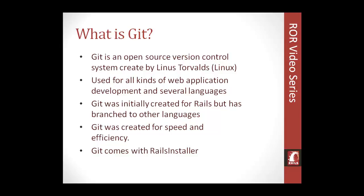Git is different from a standard version control system because it's local — all the changes you make are locally on your computer, and then after you finish making your changes you push it to the server. With a standard VCS you just have your files on your computer and the remote files, and if that server crashes your stuff is gone. With Git, it takes snapshots of changed content and saves just the changed content, so you can access the state of your files at any point.